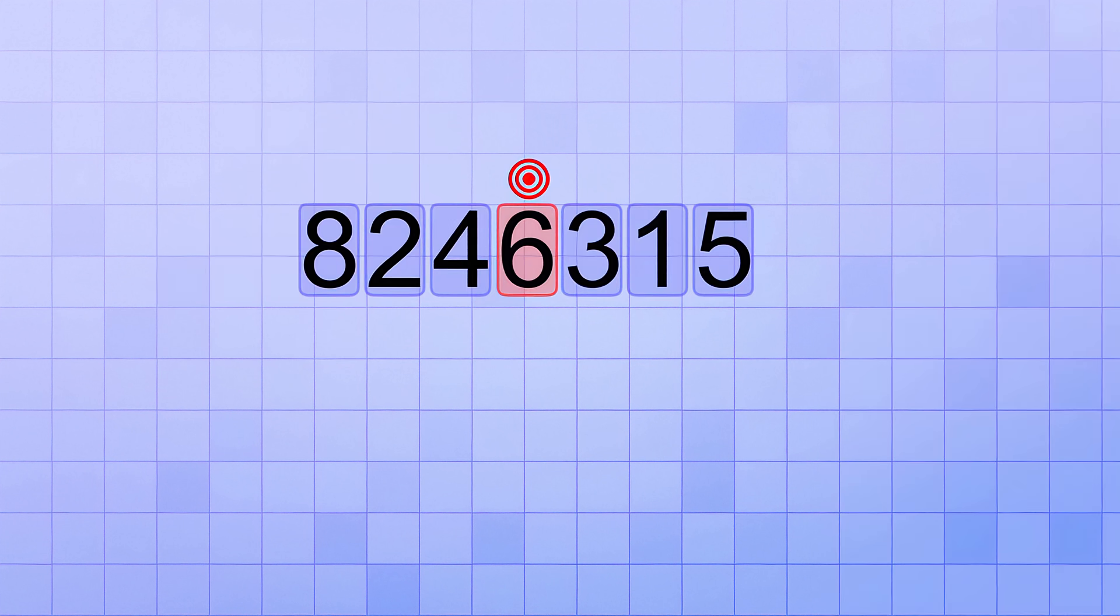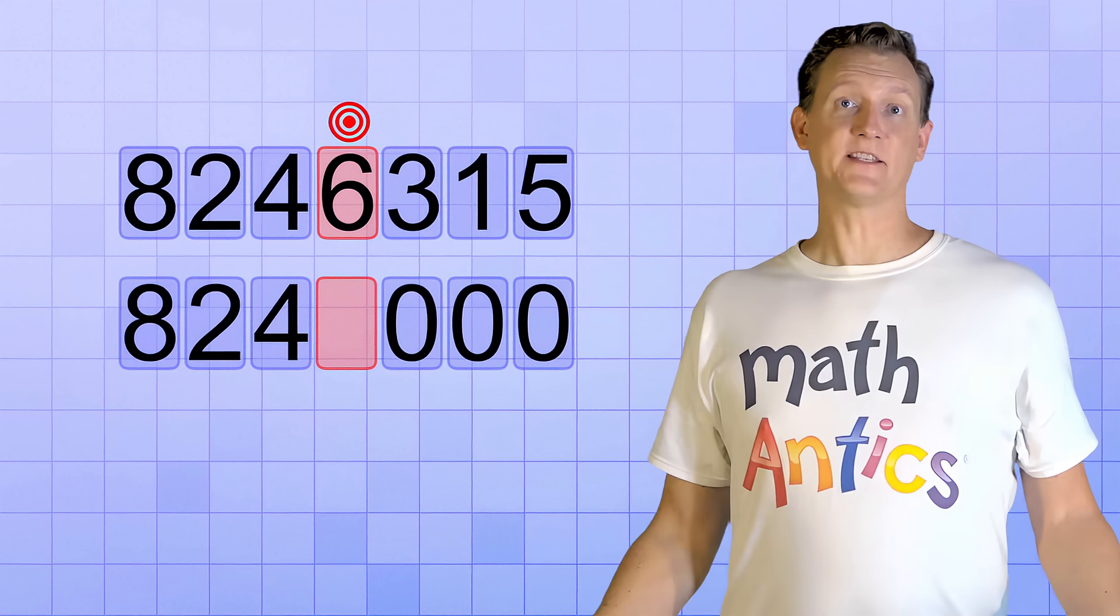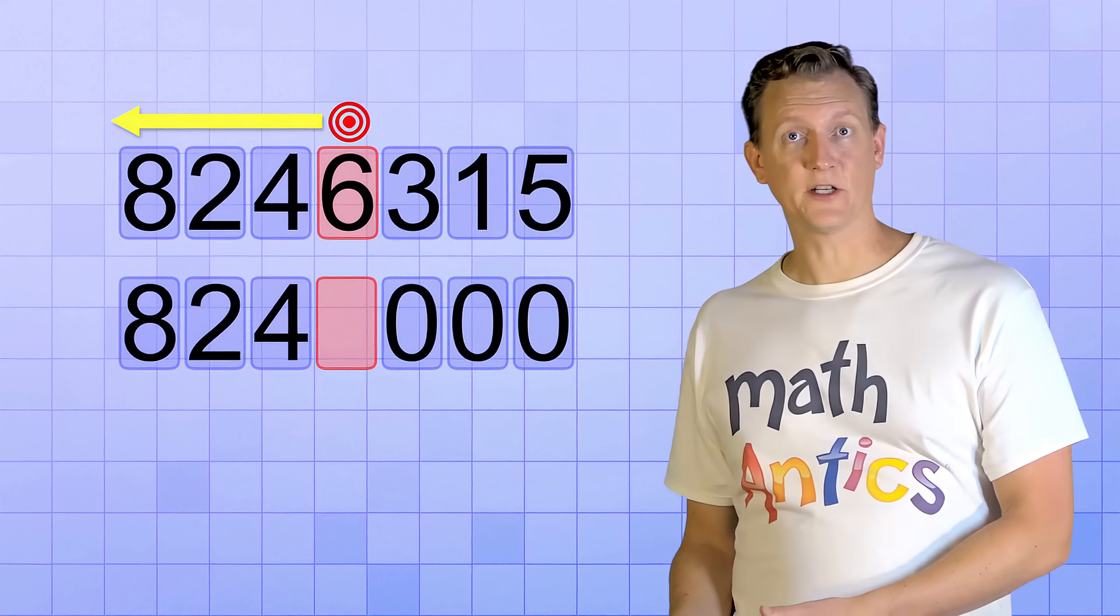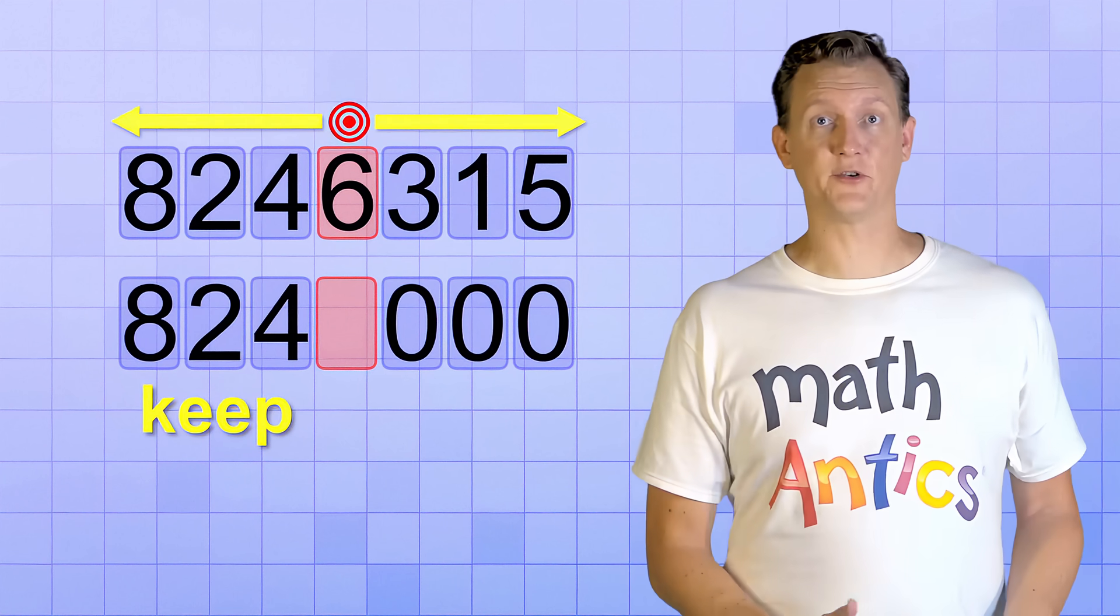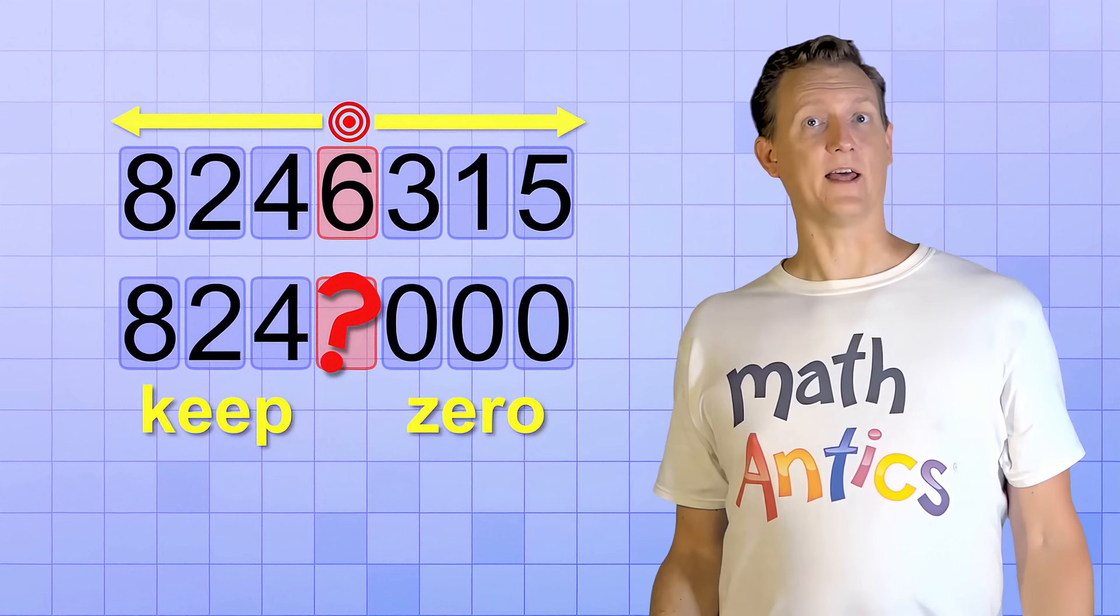As I mentioned, rounding a number means making a new, less precise version of it. In that new number, any digits that are in number places smaller than the target will automatically get replaced with zeros. And in most cases, any digits that are in number places larger than the target will automatically be kept the same in the new rounded version. There are some exceptions, as we'll see later in this video. So that seems pretty simple. All the bigger digits you keep, and all the smaller digits you zero. But what about that target digit itself? What do we do with that?